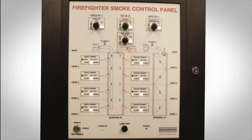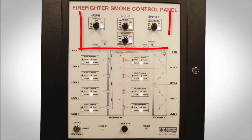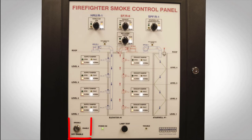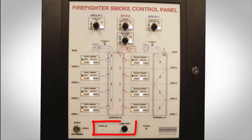A smoke control system will also consist of a firefighter's smoke control station — a standalone cabinet containing a graphical representation of the smoke control system, three-position switches for manual control of fans and dampers, a manual control enable switch, fan and damper status LEDs, lamp tests, and a smoke control station power LED.